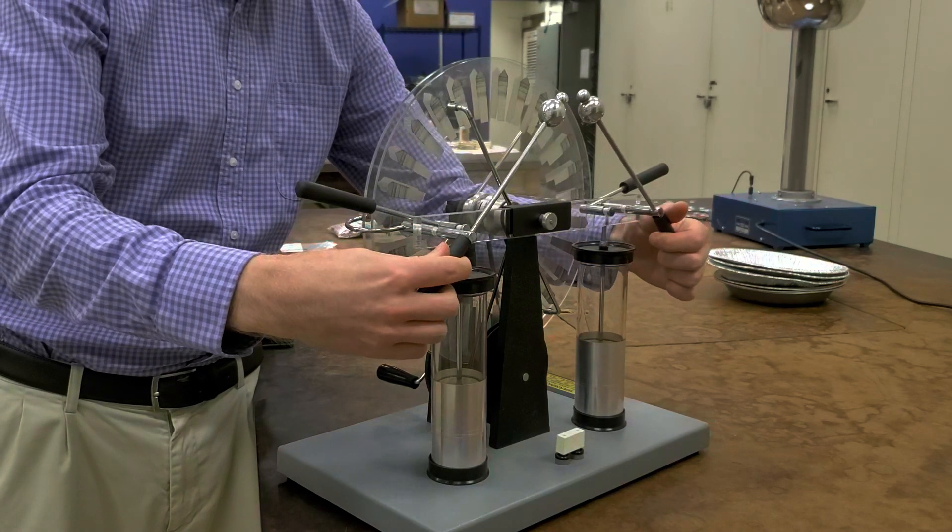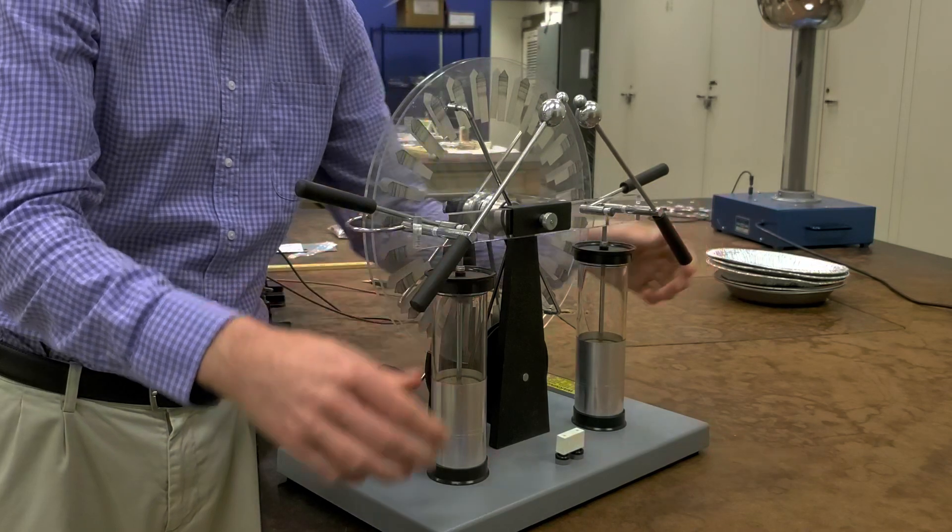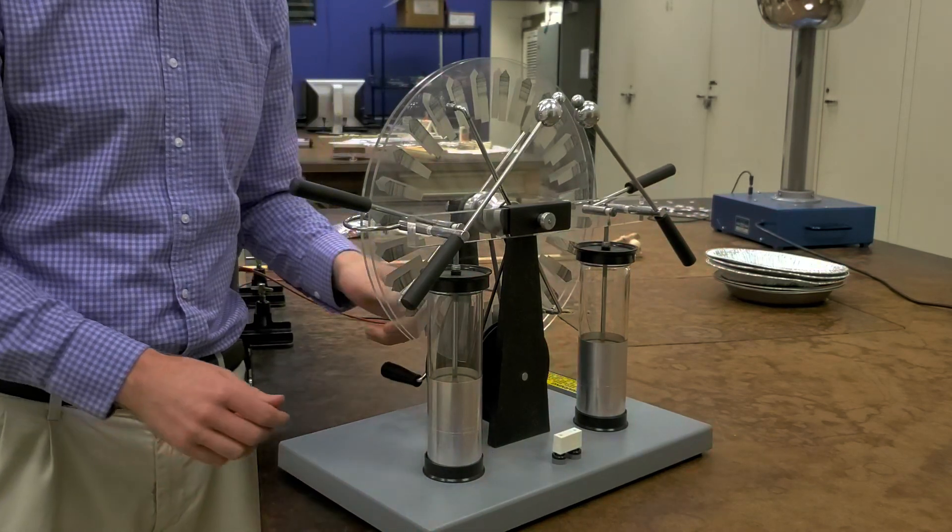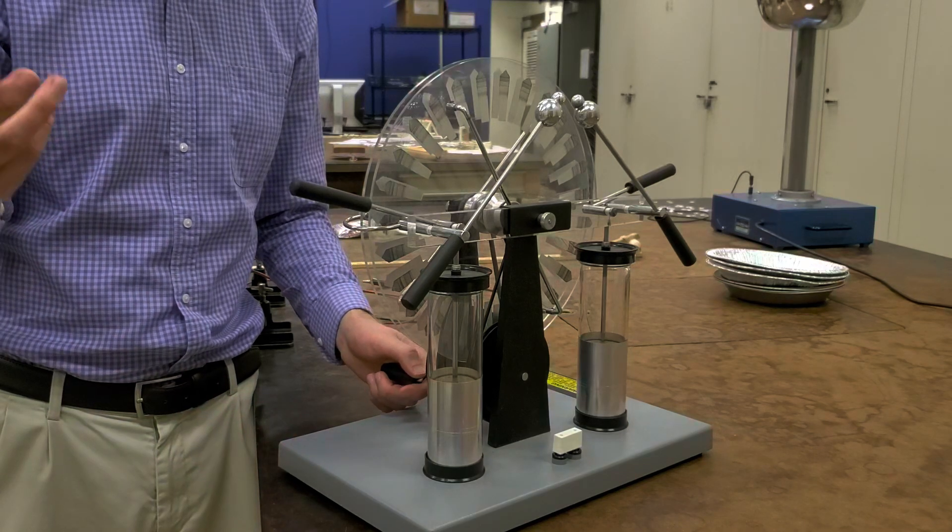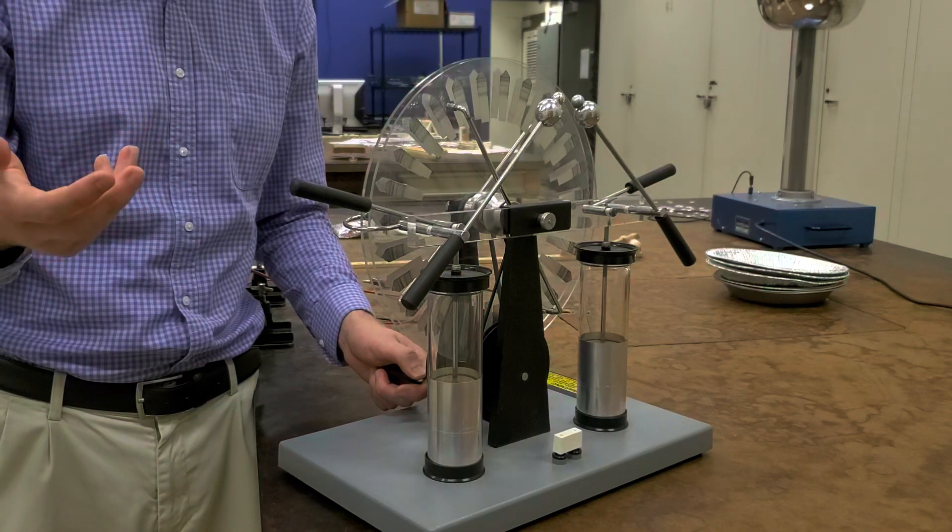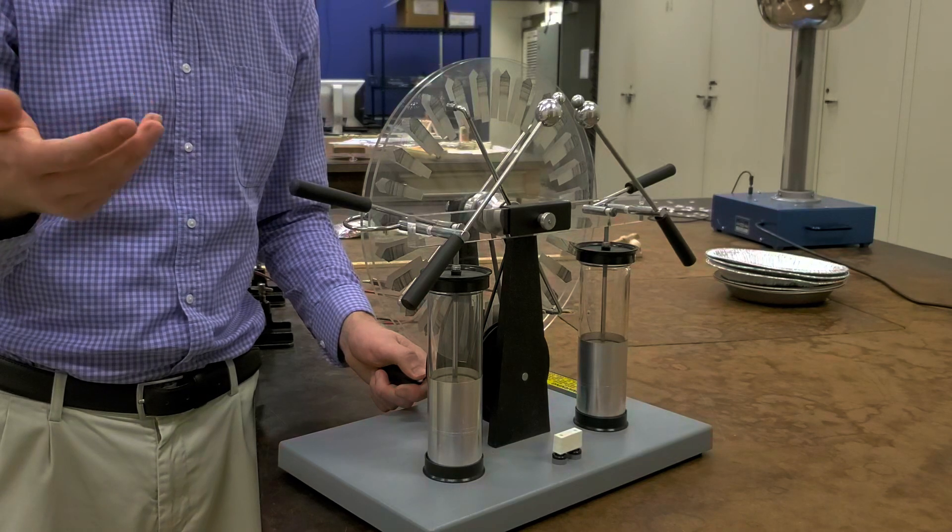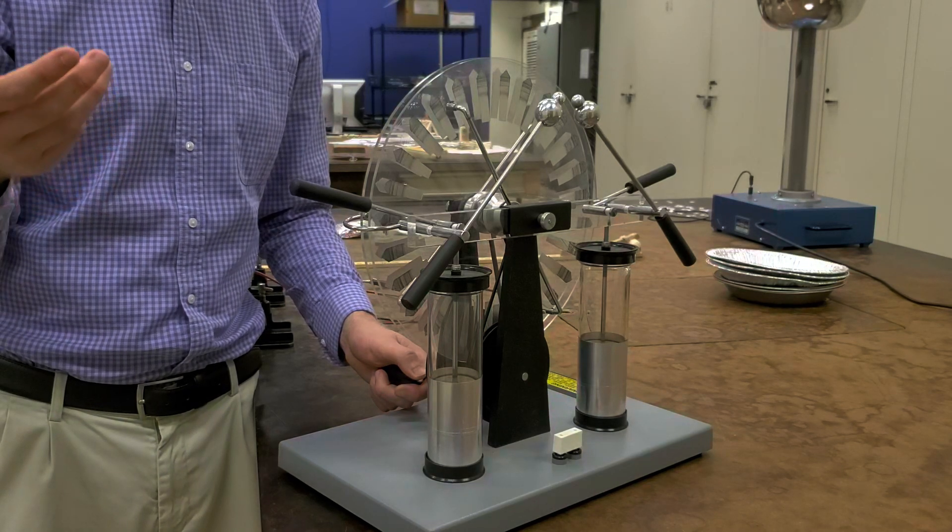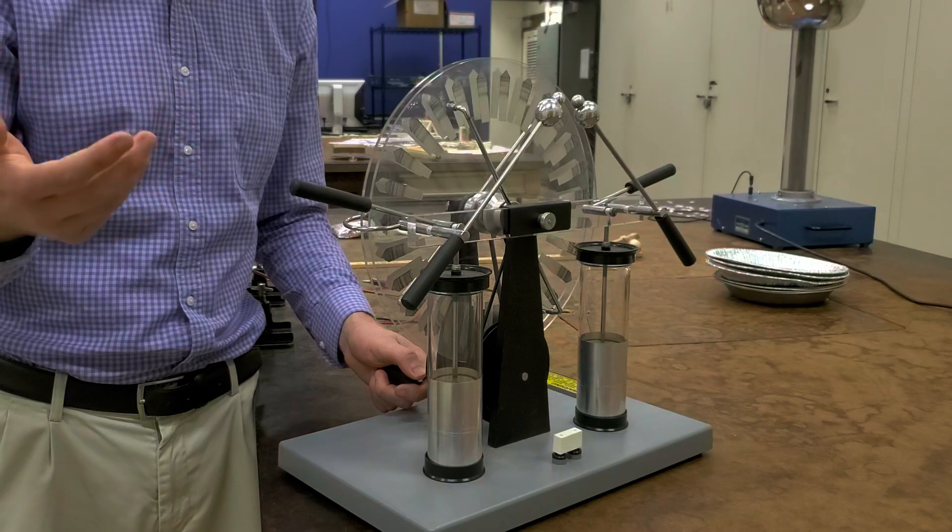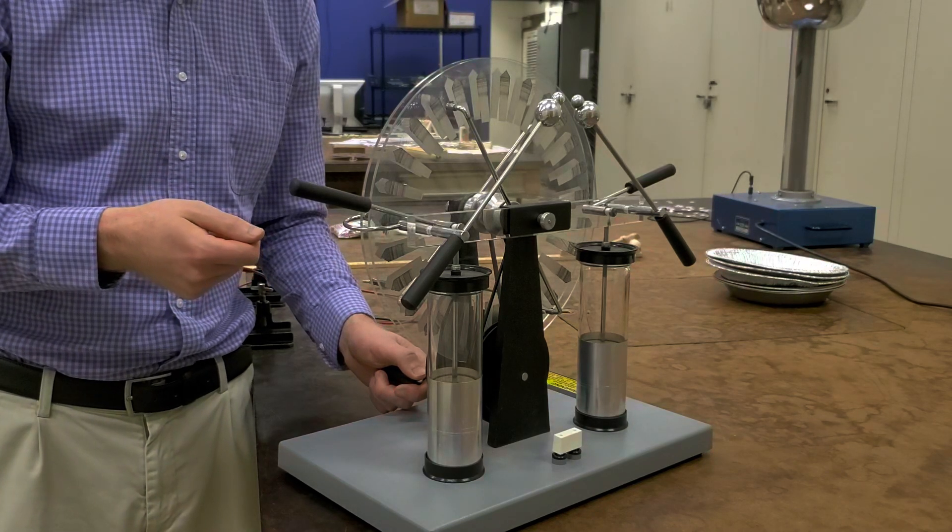Now if I start with these spheres kind of close together and I rotate this crank, there's going to be an electric field between the two that's going to increase with more charge on each of these spheres. If that electric field reaches a certain level, then the air between the spheres breaks down and they're allowed to discharge.